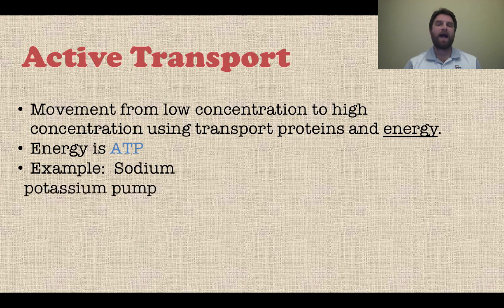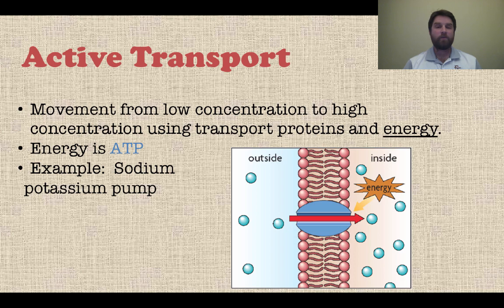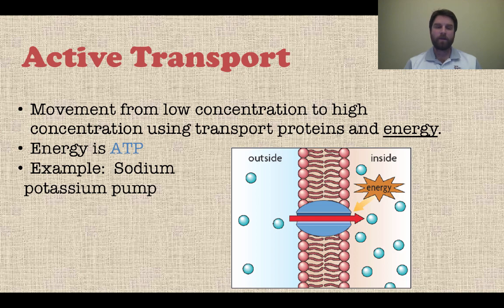Now let's move to active transport. Active transport is when you move from low concentration to high concentration — that is against the gradient. Normally, things don't want to move from low to high concentration, so this process uses transport proteins and energy. That energy is in the form of ATP, the energy currency of the cell. A good example of active transport is the sodium-potassium pump, where sodium and potassium get pumped in and out of the cell, requiring ATP because it goes against the concentration gradient.